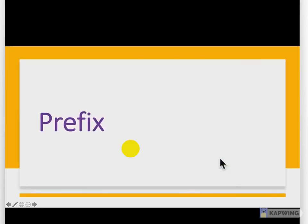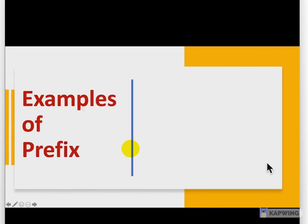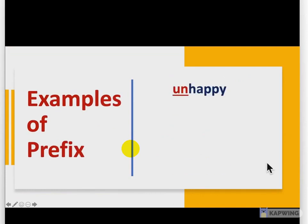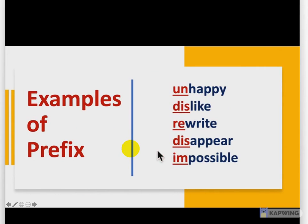A prefix is added to the beginning of a root word. Examples of prefix: unhappy, dislike, rewrite, disappear, impossible. So un-, dis-, re-, dis-, im- — these are the examples of prefix.